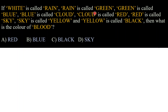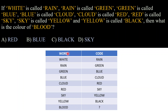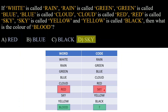Next question: If 'white' is called 'rain', 'rain' is called 'green', 'green' is called 'blue', 'blue' is called 'cloud', 'cloud' is called 'red', 'red' is called 'sky', 'sky' is called 'yellow', and 'yellow' is called 'black', then what is the color of blood? To simplify this, I have written everything in a table — word and its code. The color of blood is red, and red is coded as 'sky', so our answer is option D: sky.